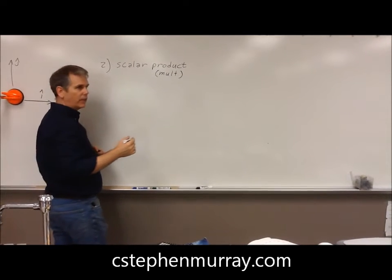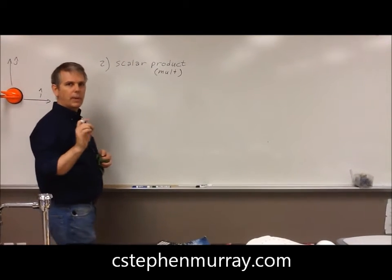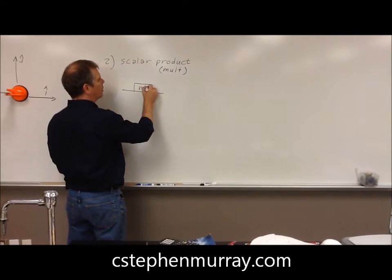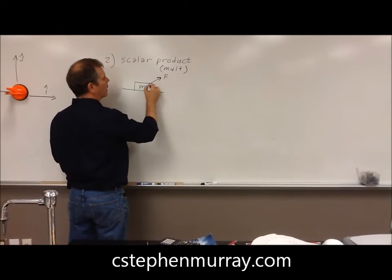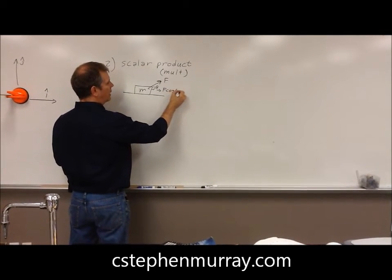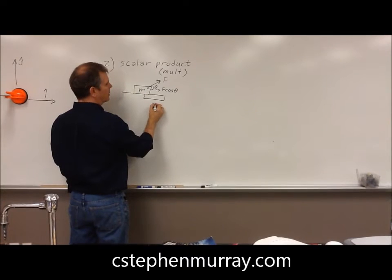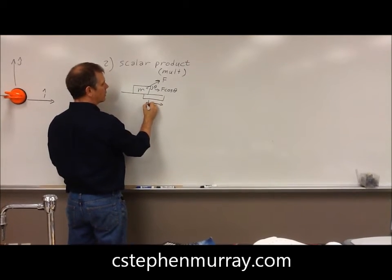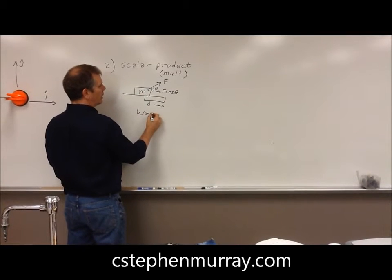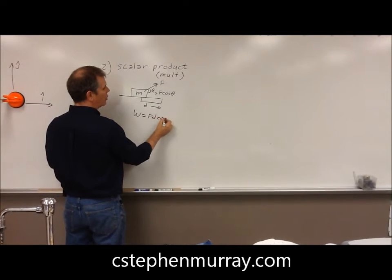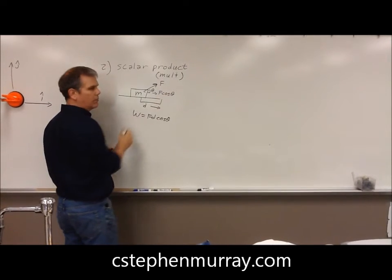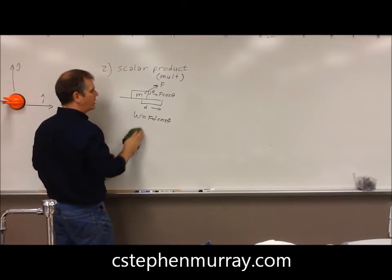And work is only parallel components. We have an item being pulled by a force at a particular angle. This would be F cosine theta, this would be the distance it moves. And so the work would equal F d cosine theta, where it multiplied the parallel components. Let's do that now.